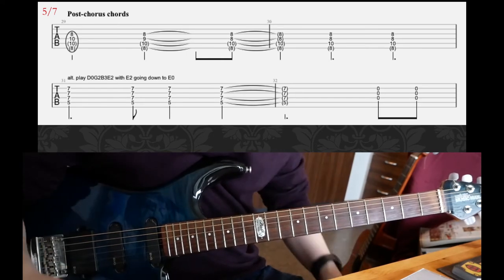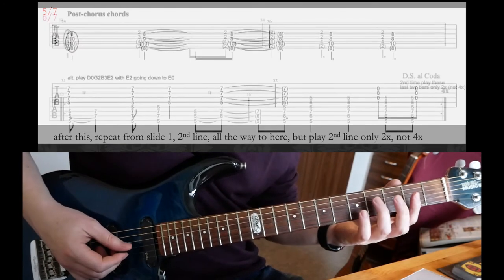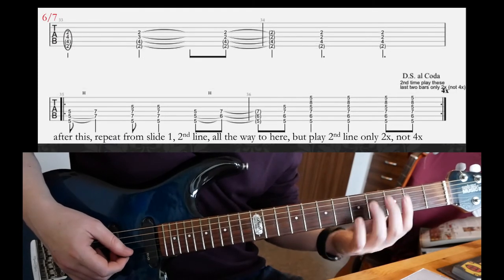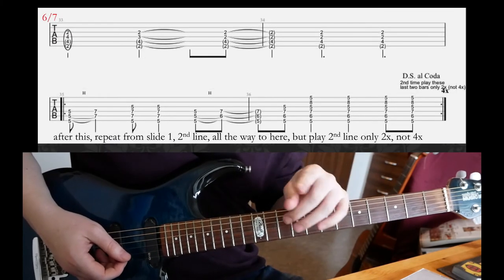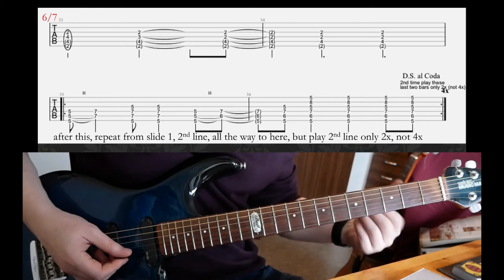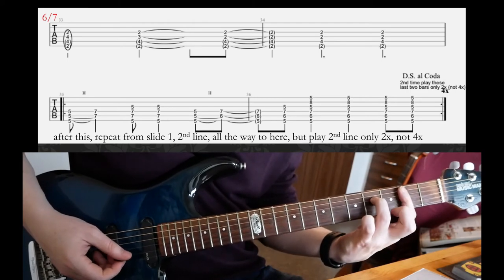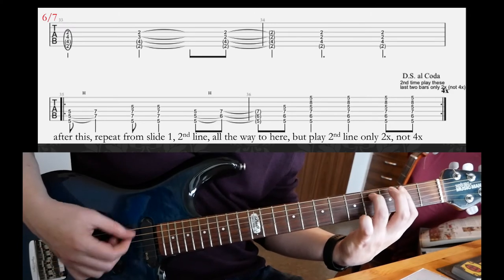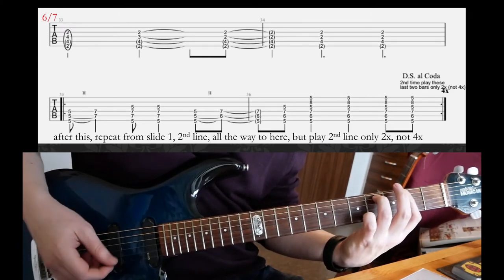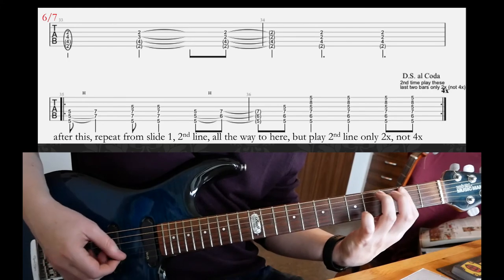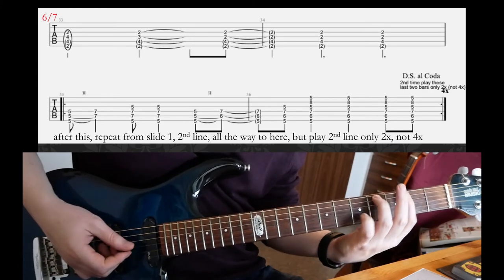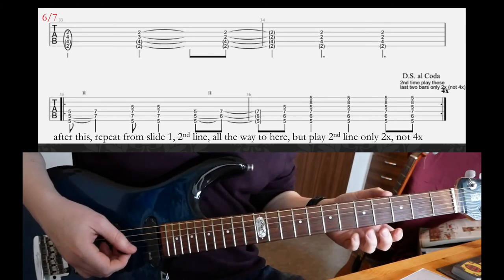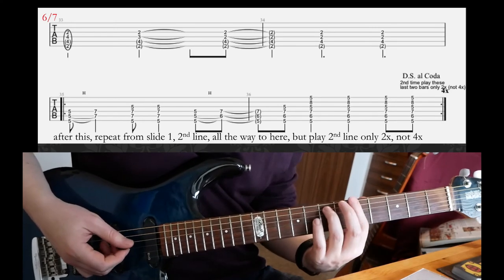Then slide 6, we continue with those post-chorus stuff. So the first line is exactly the same idea as on the first line on the previous slide, but you're going to be on the second fret instead, and you're going to do this. It's basically that. And that's it. Then the second line.